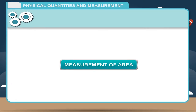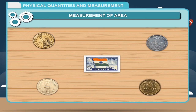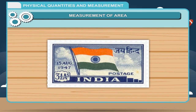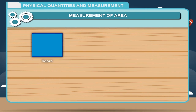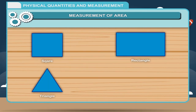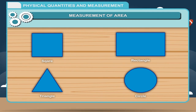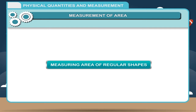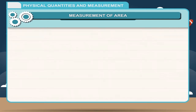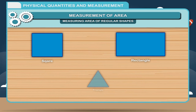Measurement of Area: The extent of the surface occupied by an object is called its area. Area is the region enclosed within the boundaries of a two-dimensional figure, which has only two dimensions — length and breadth. Squares, rectangles, triangles, and circles are all examples of two-dimensional figures. The area of a regular surface such as squares, rectangles, and triangles can be calculated by using specific formulas.